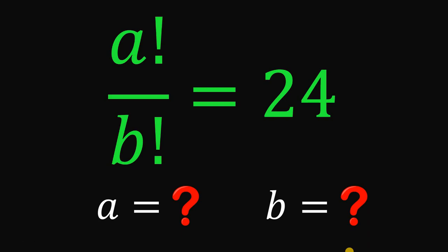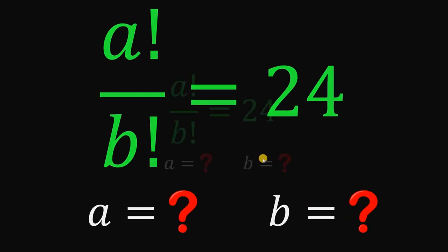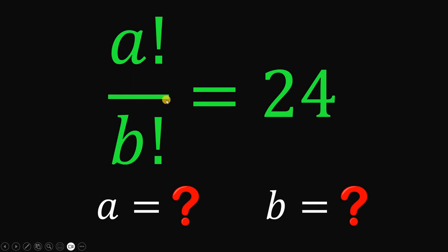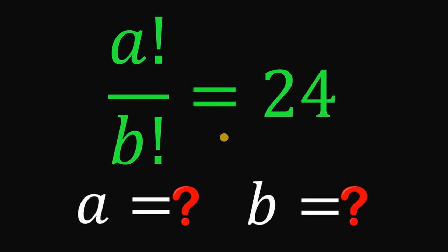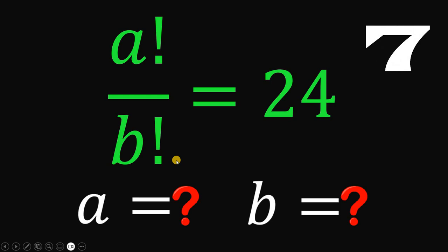For today's video, we will answer a math challenge given by one of our followers from India. The question goes like this: given that a factorial over b factorial equals 24, our goal is to solve for the values of a and b. You can pause this video if you want to give this problem a try.